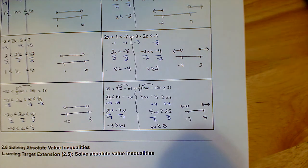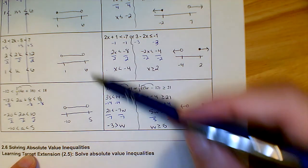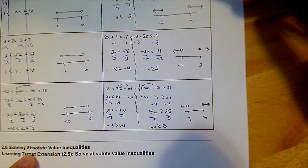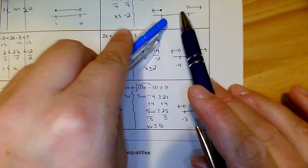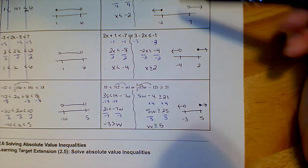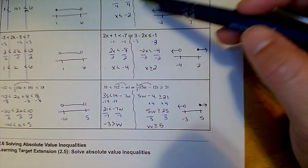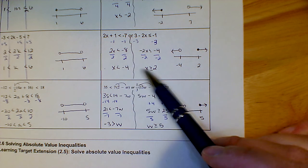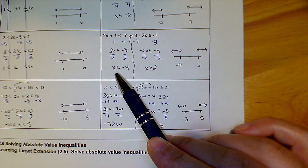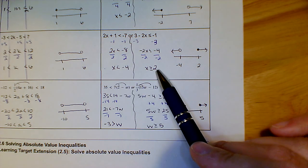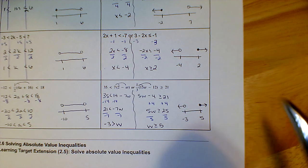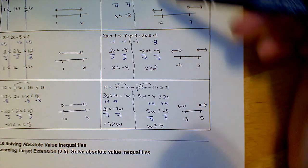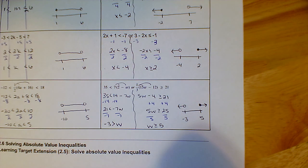As long as you know that an 'and' situation means the graph is in the middle, it's pretty straightforward. With an 'or' situation, the graph goes in opposite directions. You can always double-check: did you flip your sign correctly? Do you have a less than or greater than for x? There's just a little bit of difference, but overall this is solving inequalities just like we've done before.